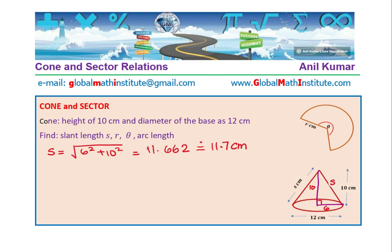Now, this slant length is related with the sector. Can you tell me how they are related? The slant length is same as the radius. These two sides, the slant length and the radius, they are exactly same. Therefore, the radius of the sector equals the slant length of the cone, which is 11.7 cm. Both are exactly same.